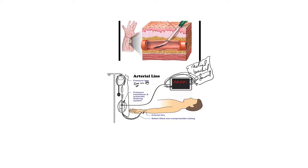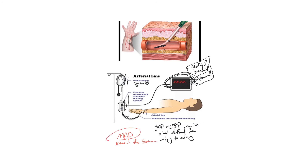It's important to note that systolic and diastolic blood pressure can vary slightly from artery to artery. For example, placing the line in the aorta gives slightly different systolic and diastolic numbers compared to femoral or radial. However, the MAP — the mean arterial pressure — remains the same regardless of the site. That's why when we titrate vasopressors, we target a mean arterial pressure, for example 60 or 65, so we don't need to worry about whether the catheter is in the radial, brachial, or femoral artery.